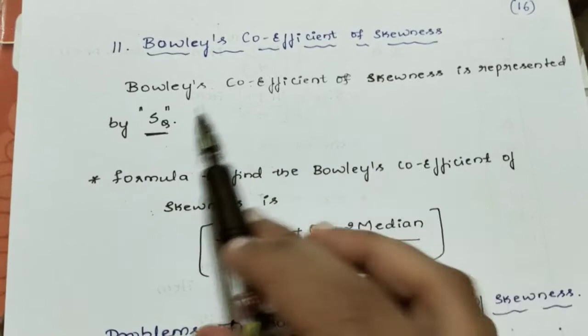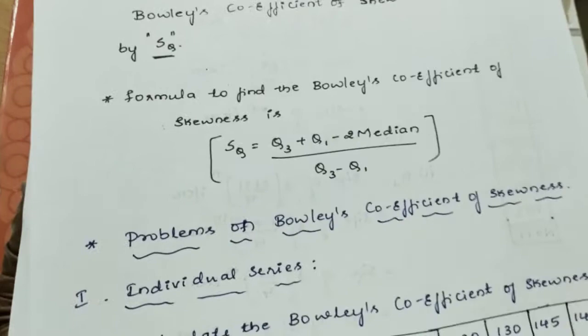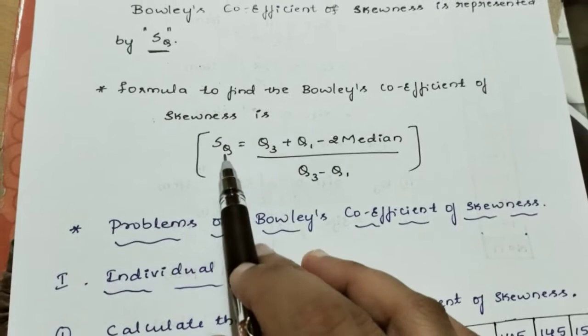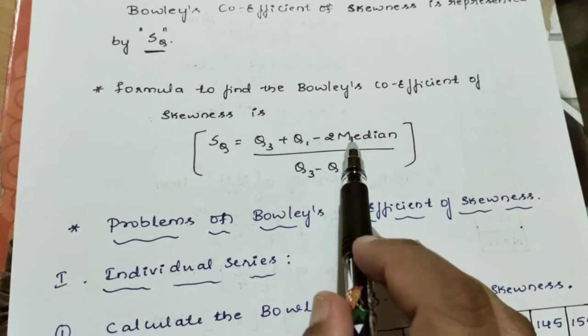Here is the formula to find the Bowley's coefficient of skewness: SQ is equal to Q3 plus Q1 minus 2 into median, divided by Q3 minus Q1.